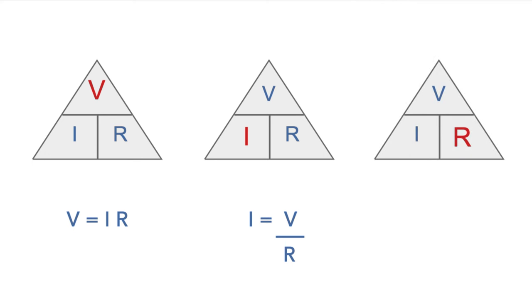Finally, if the resistance is needed, then this can be highlighted, and it leaves V at the top, and I on the bottom row. So we have R is equal to V divided by I.